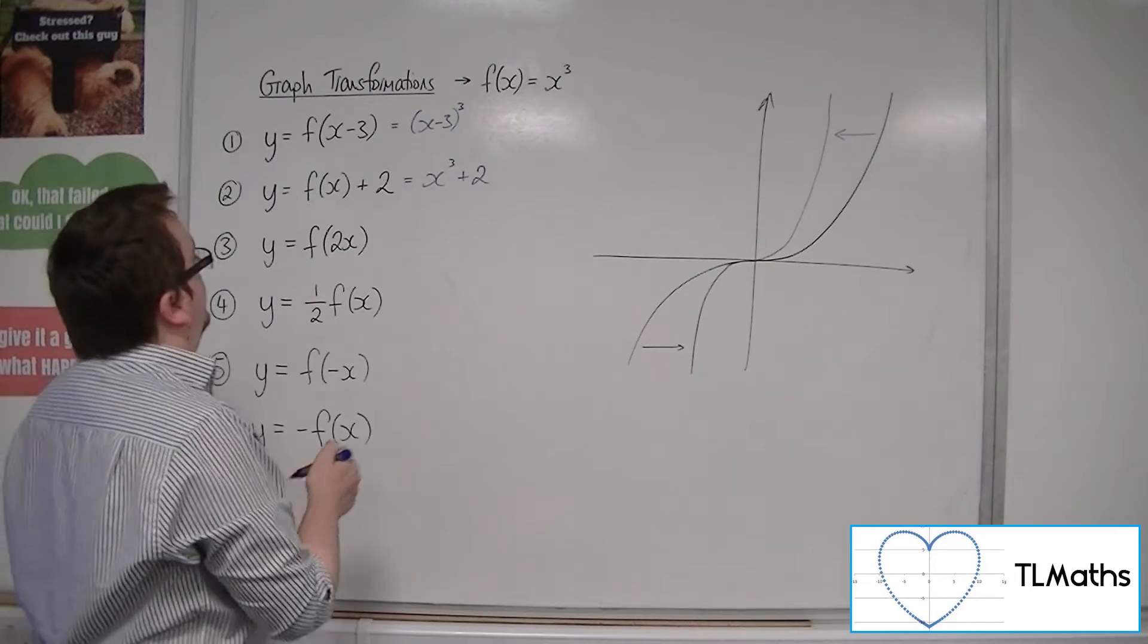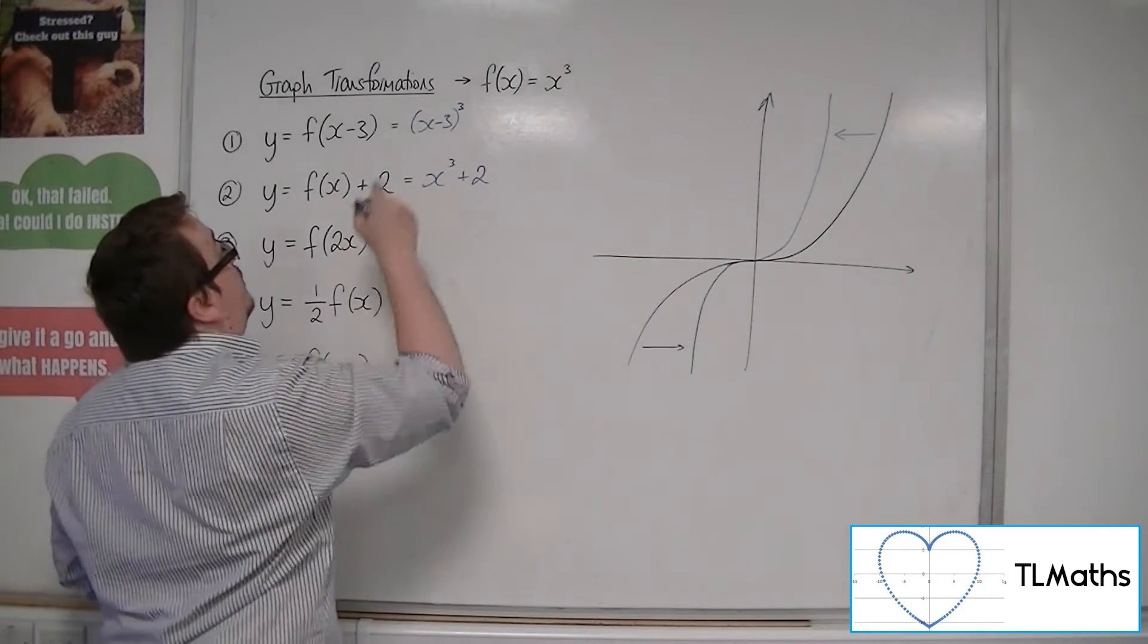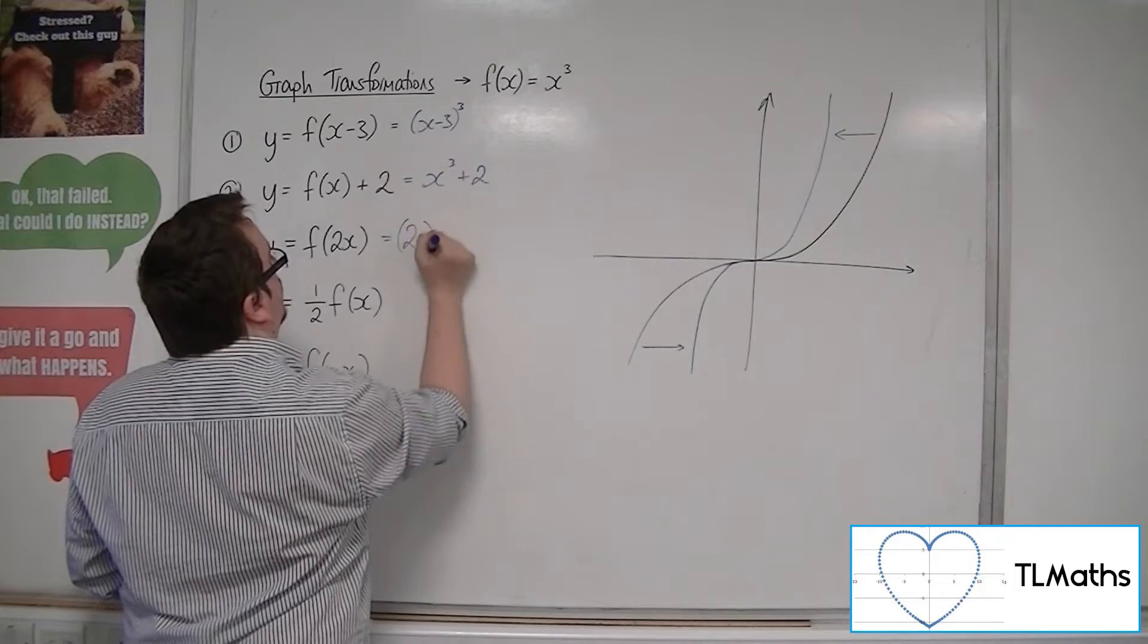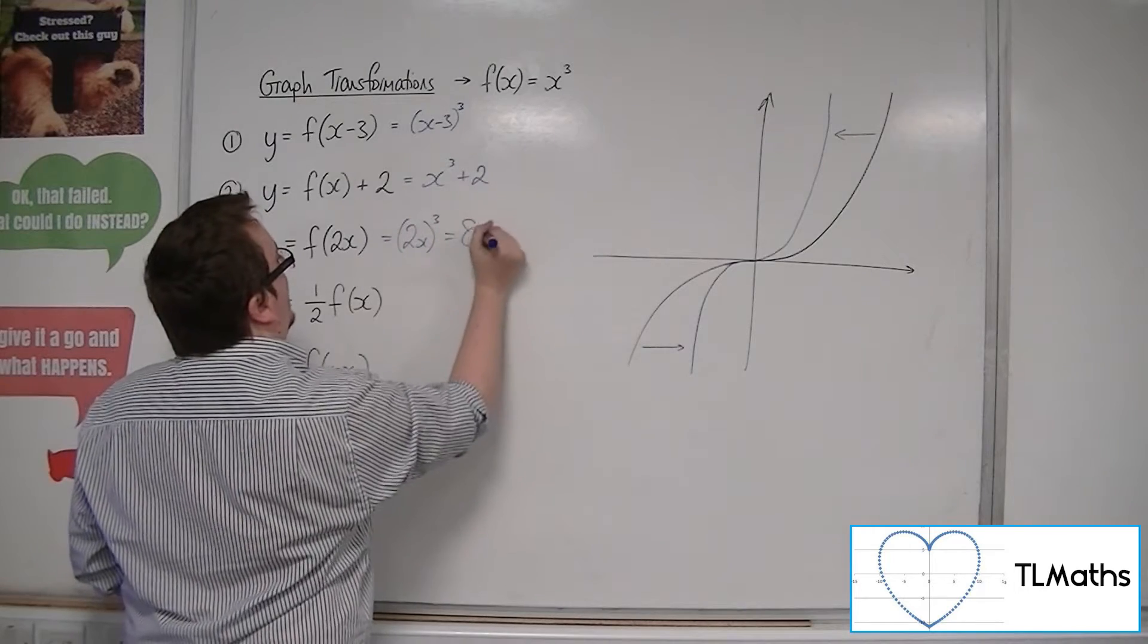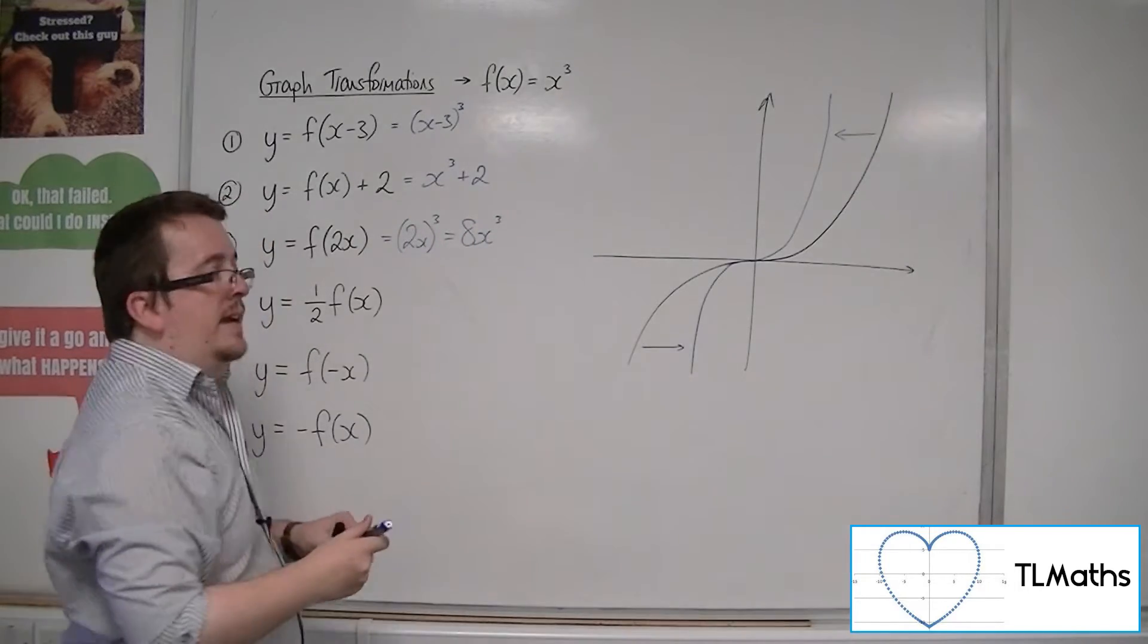So if I replace the x with 2x, I get 2x cubed. And so that would be 8x cubed. y equals 8x cubed.